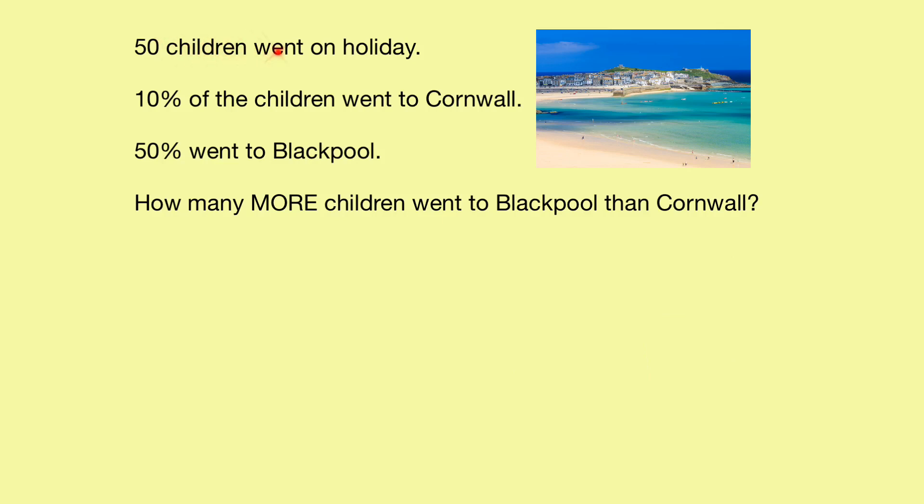50 children went on holiday. 10% of them went to Cornwall. Lovely picture of Cornwall there. 50% went to Blackpool. Gone for the roller coaster. How many more children went to Blackpool than Cornwall? And this is your classic SATs 2 or sometimes even a 3 mark question. Now, the first step we need to do is we need to calculate how many children went to Cornwall. So, that, of course, is 10% of 50.